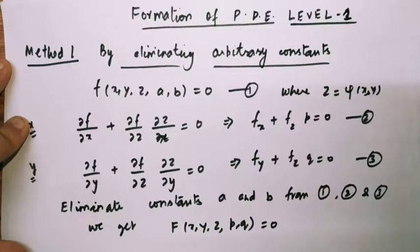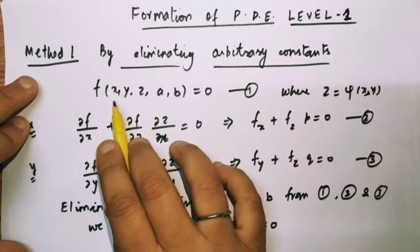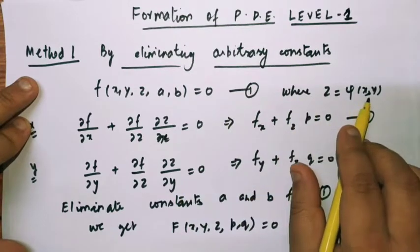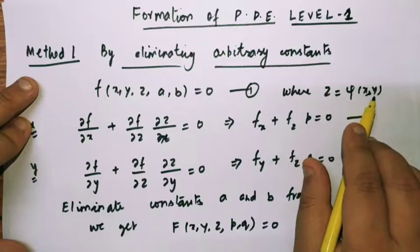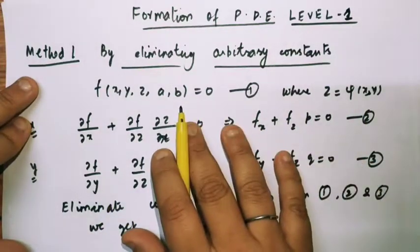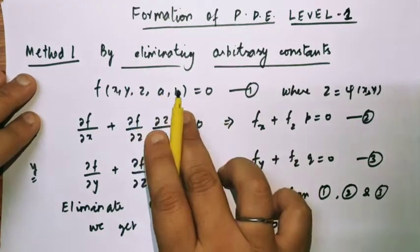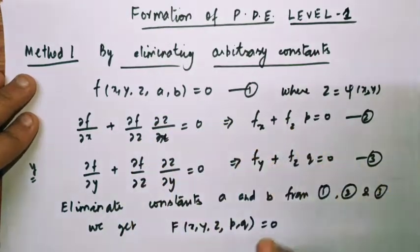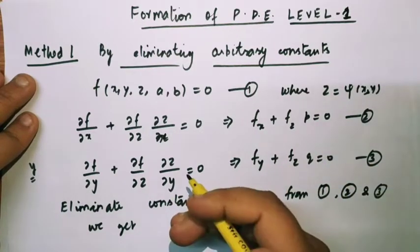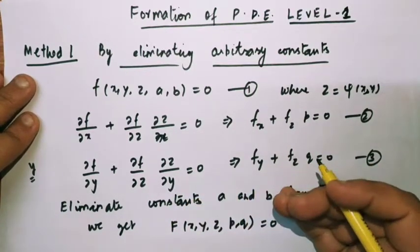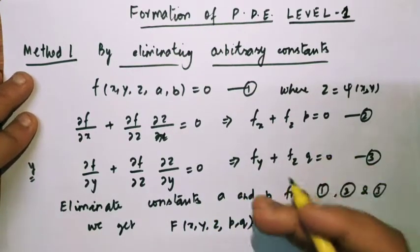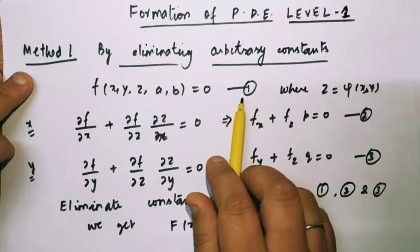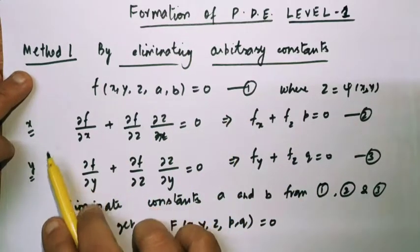The first method is by eliminating arbitrary constants. For example, an equation is given: f(x, y, z, a, b) = 0, where z is a function of x and y, and x and y are the two independent variables. We form the partial differential equation by eliminating the two arbitrary constants a and b. In ODE we differentiated with respect to x because there was one independent variable. But in PDE, there is more than one independent variable, therefore we differentiate equation 1 partially with respect to x and also with respect to y.